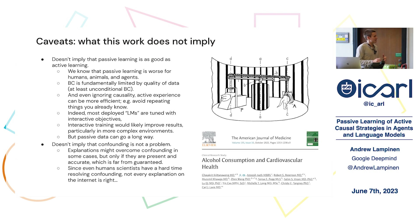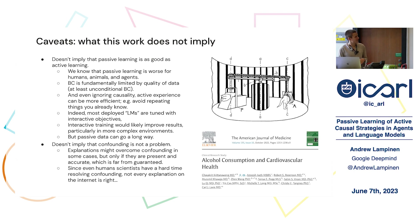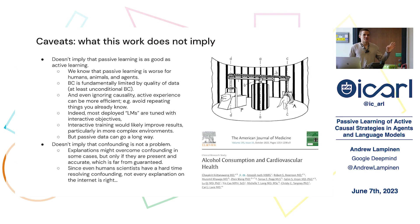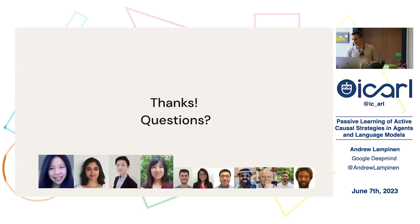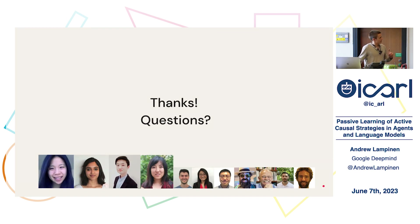The second caveat: this work doesn't imply that confounding is not a problem. There are certainly cases where explanations might help you overcome confounding, but only if the explanations are there and accurate — which is definitely not guaranteed. For example, in the medical literature there are lots of cases where humans are still trying to figure out confounding in structures we're quite interested in, such as how alcohol consumption affects cardiovascular health. Not every explanation on the internet is right, and there may be fundamental limitations on how well language models can do because of the inadequacy of the knowledge they're trained on. Thanks to all of you for listening, and thanks to my collaborators.